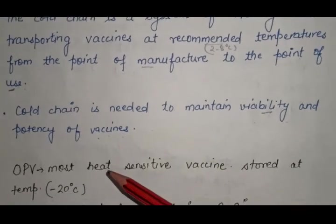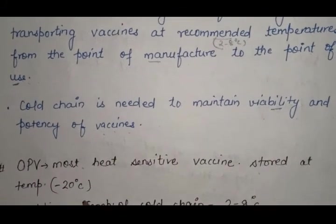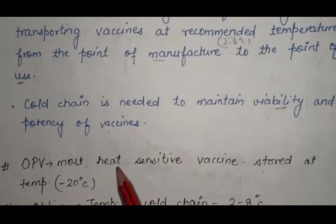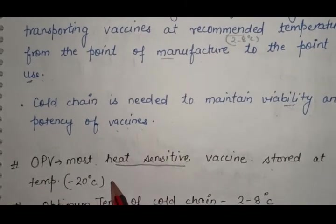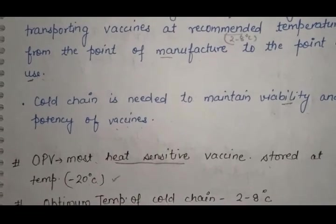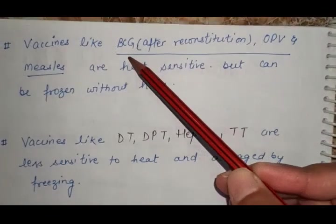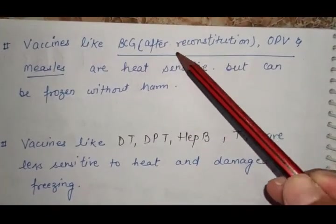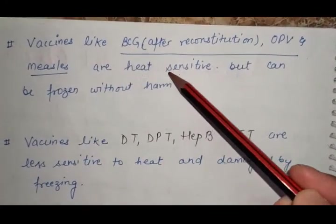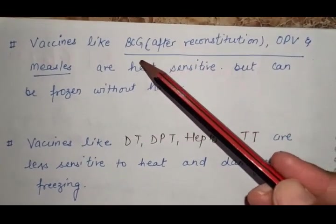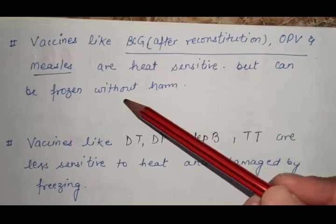OPV vaccine is the most heat sensitive vaccine. It should be stored at minus 20 degrees Celsius. Optimum temperature of cold chain is 2 to 8 degrees Celsius. Vaccines like BCG after reconstitution, OPV and measles are heat sensitive, but can be frozen without harm.